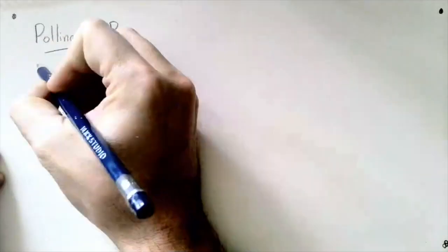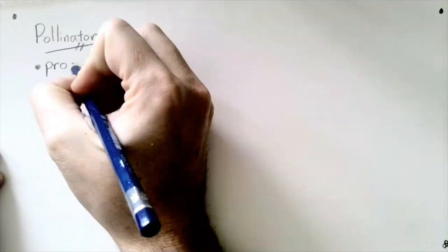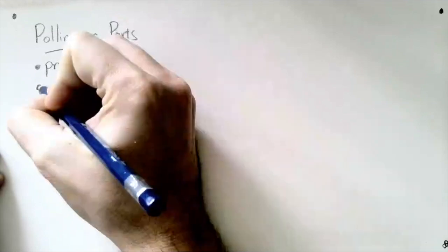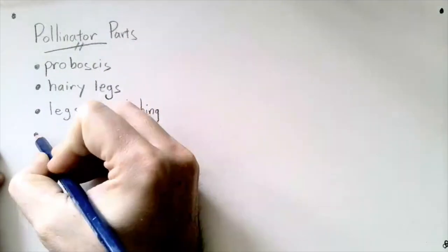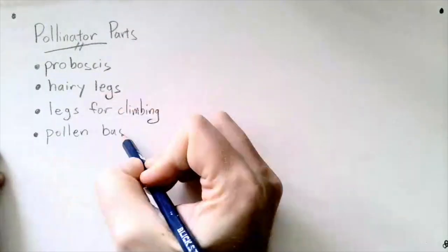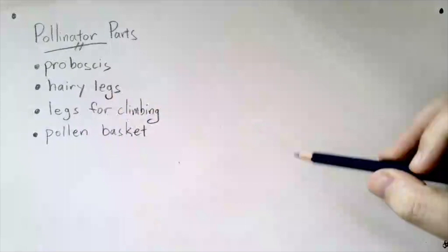The first thing I'm going to do is make a list of the things that a pollinator might have, like a proboscis, hairy legs, legs for climbing, or maybe a pollen basket. Then I have to think about maybe using some unusual animals that aren't usually pollinators to create a new creature.